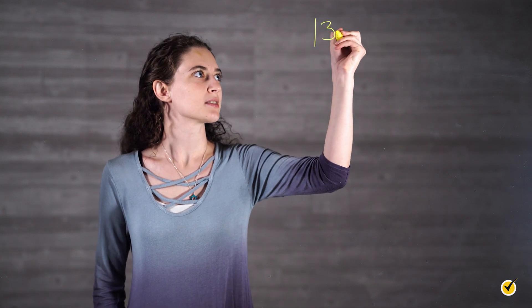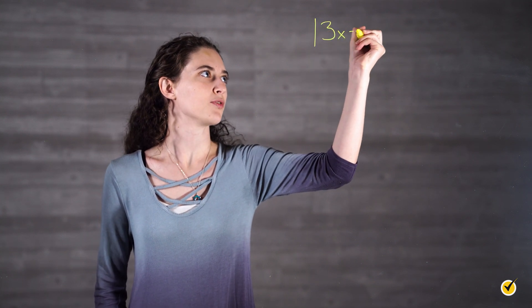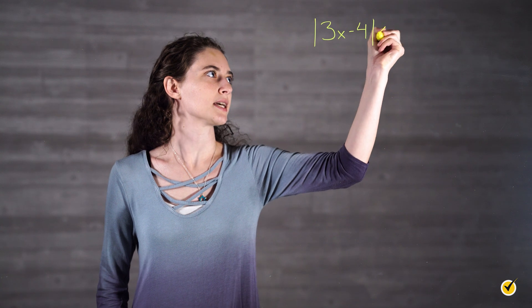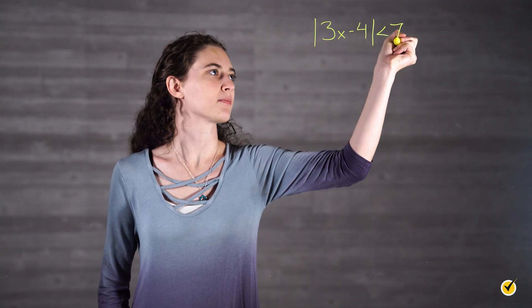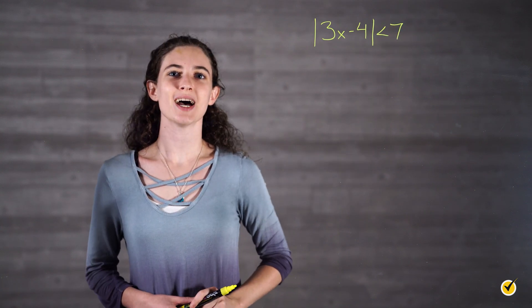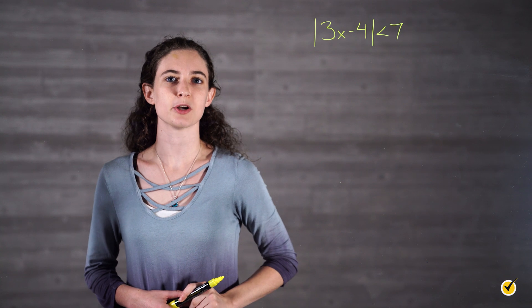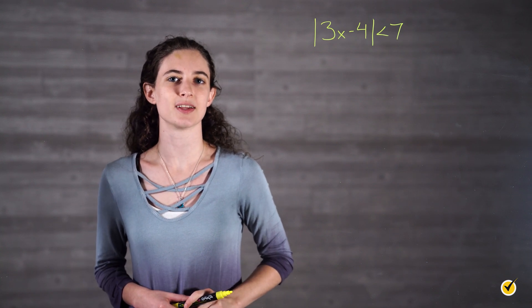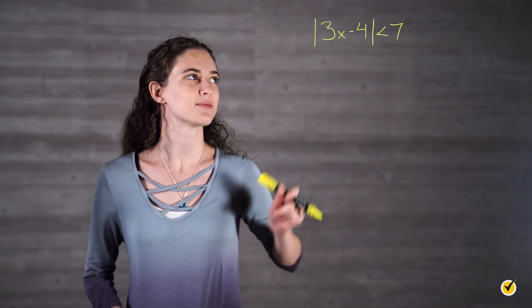Let's look at an example to see what I'm talking about. The absolute value of 3x minus 4 is less than 7. First, we remove the absolute value signs and place the expression between positive and negative 7, like this.